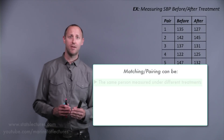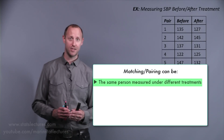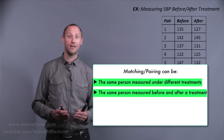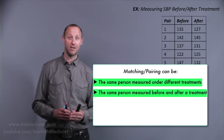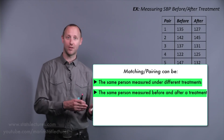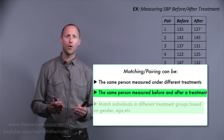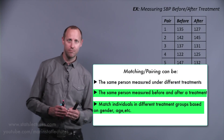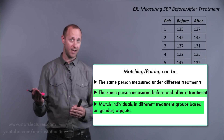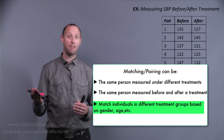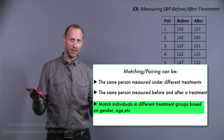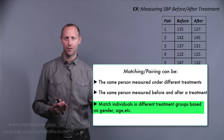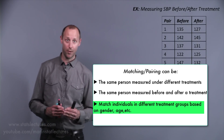For example, we might be looking at the same person measured under two different treatments, or the same individual measured before and then after receiving some treatment. In cases where we don't have the same individual, we might take someone in treatment A and match them with someone in treatment B — usually matching on age, gender, or other variables we think are important.